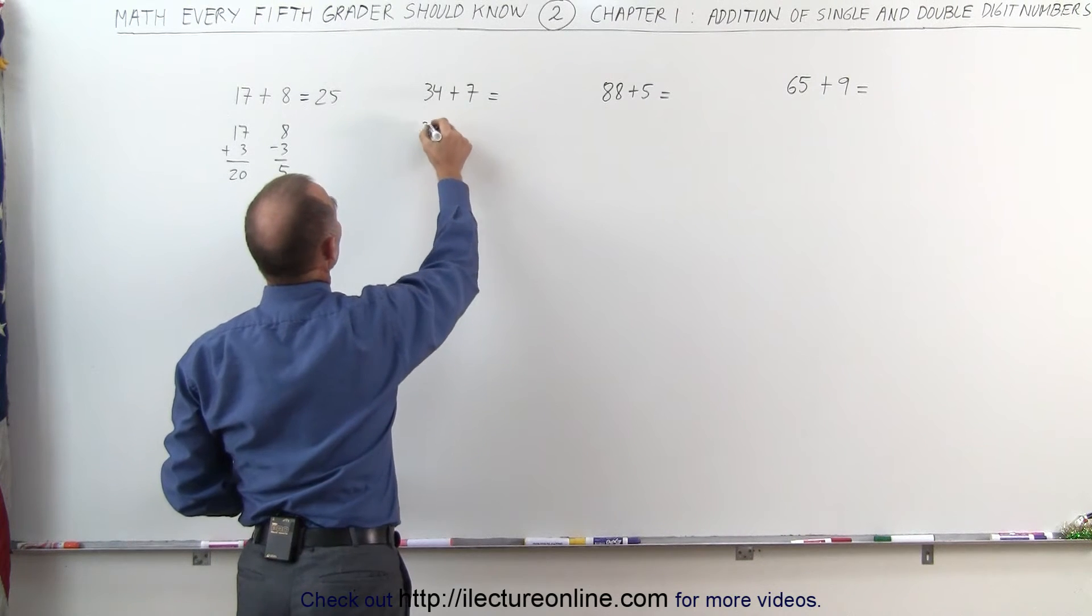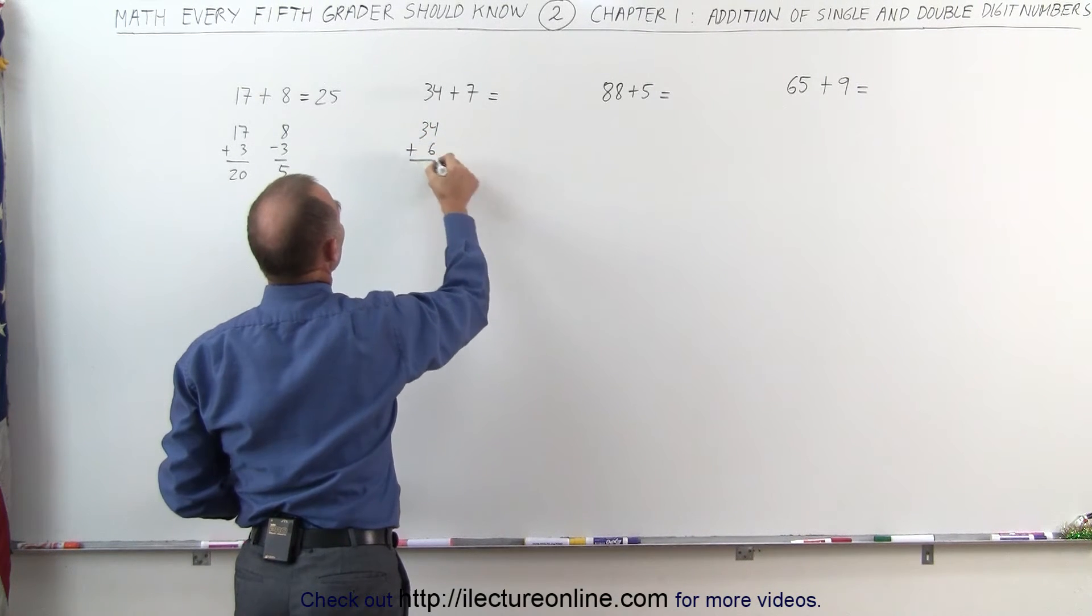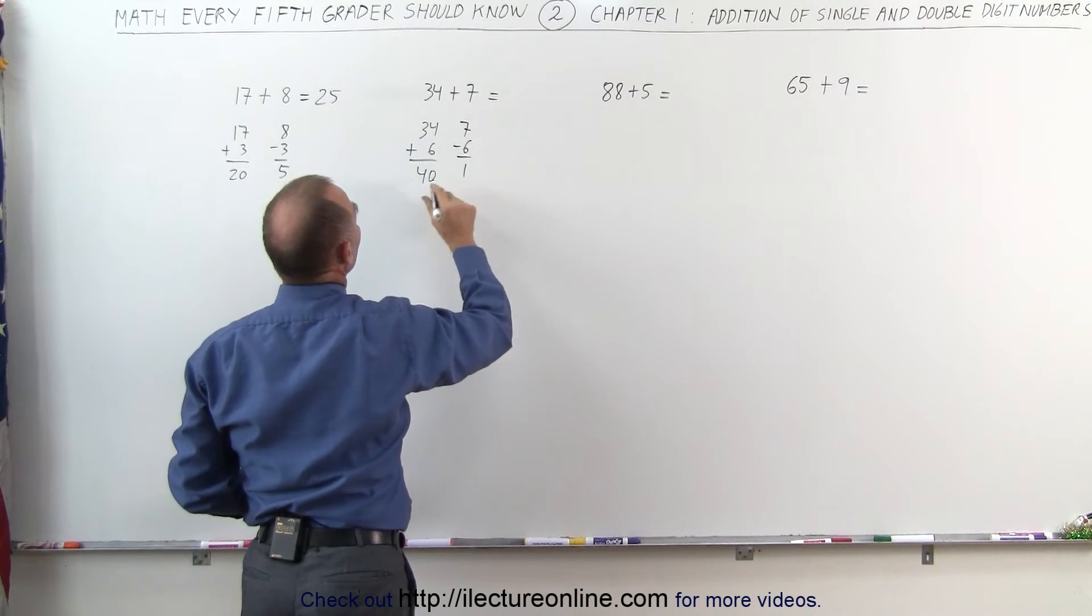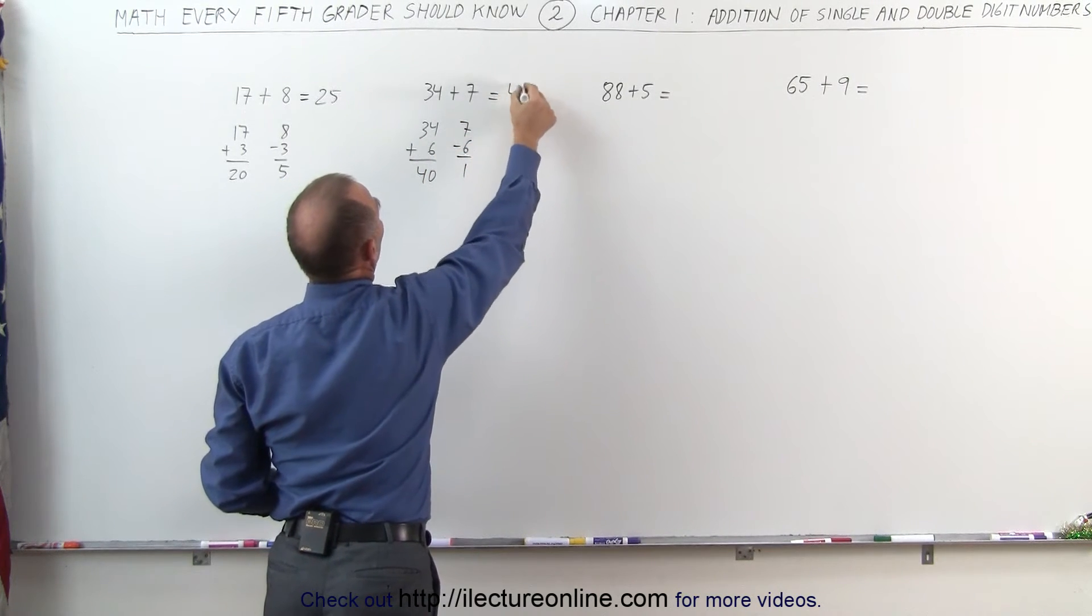The way we did that again is 34 plus 6 gives me 40. I subtract the 6 from 7, I get 1. 40 plus 1 is 41.